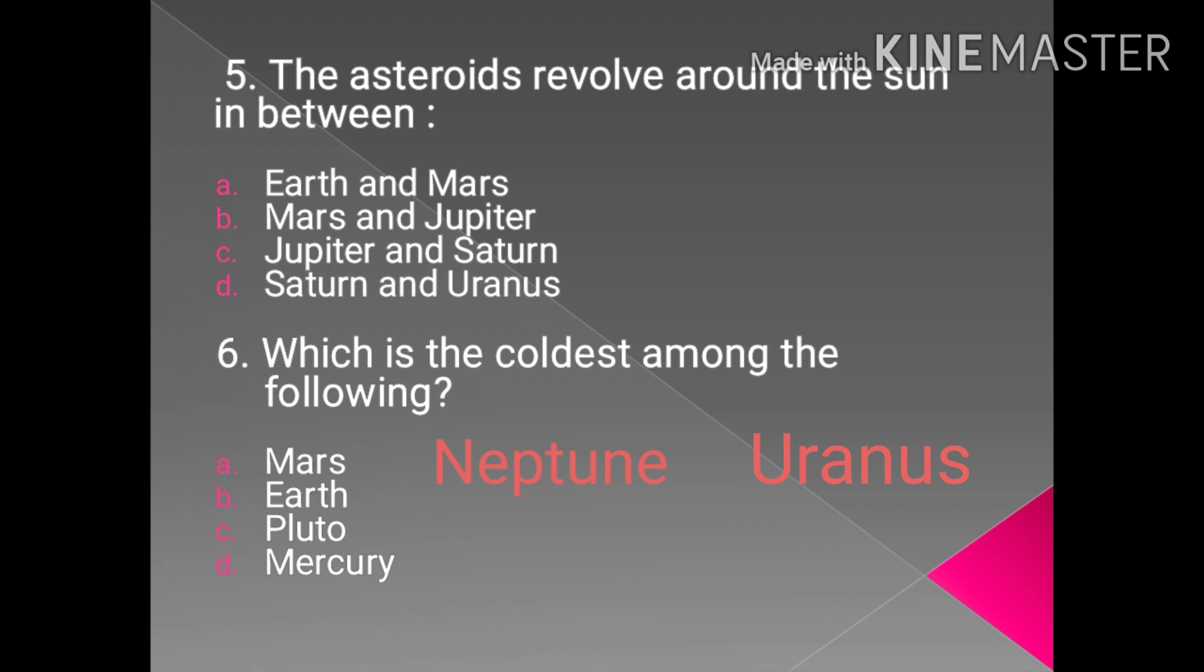For this we have two answers. One is Neptune and the other is Uranus. Why we have these two answers, not one? Because Neptune is the planet whose average temperature is least, whereas Uranus is the planet on which scientists recorded the lowest temperature.